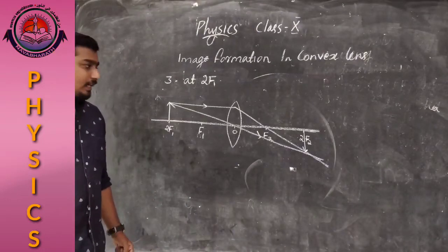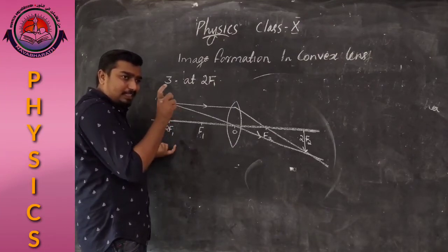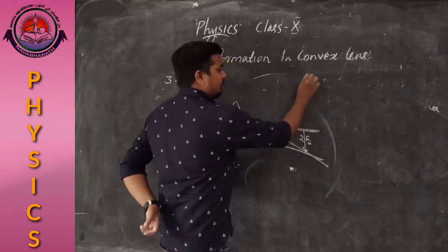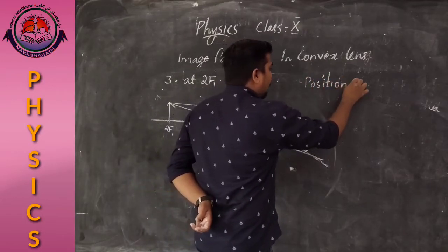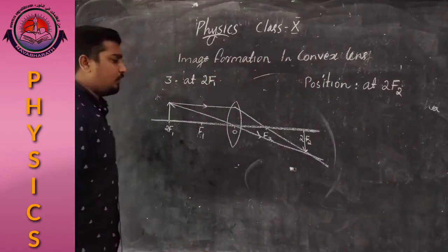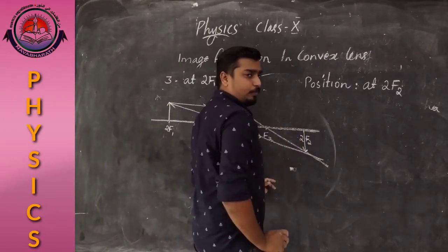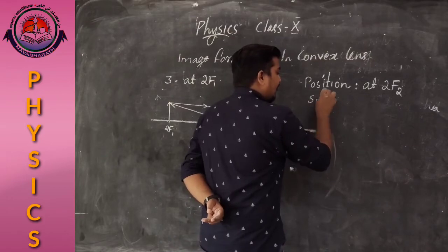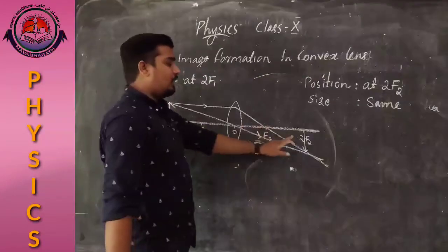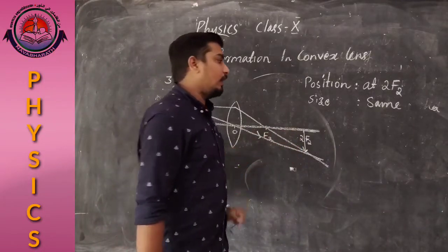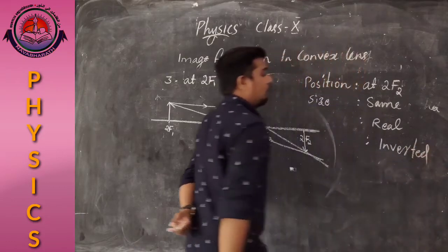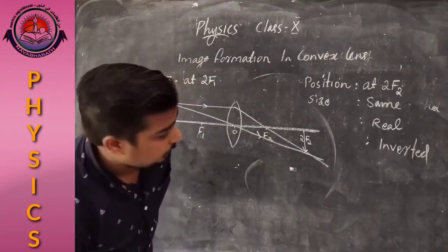When the object is placed at 2F1, that is at the center of curvature, the image position is at 2F2. The size of the image is the same size as the object — the height of the object and the height of the image are equal. The image is real and inverted.